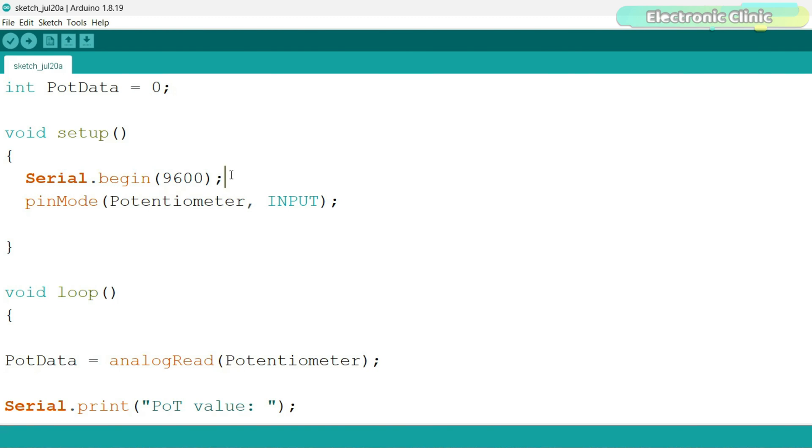Without activating the serial communication, you won't be able to send the data to the serial monitor or serial plotter. Next, we set the potentiometer as input.